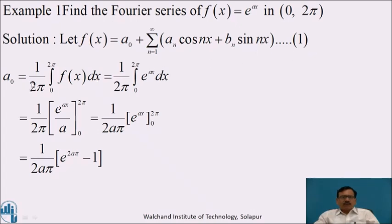Now we calculate a₀ by the formula: a₀ = (1/2π) ∫₀^(2π) f(x) dx = (1/2π) ∫₀^(2π) e^(ax) dx. Integration of e^(ax) gives (1/2π) · [e^(ax)/a] from 0 to 2π, which equals (1/2aπ) · [e^(2aπ) − e^0], since e^0 = 1.